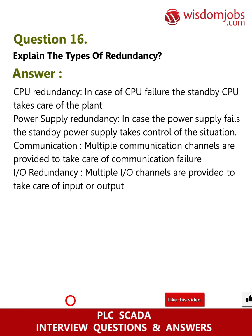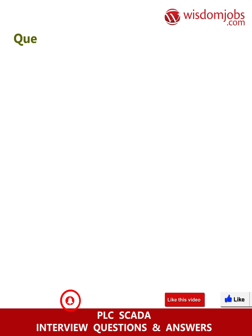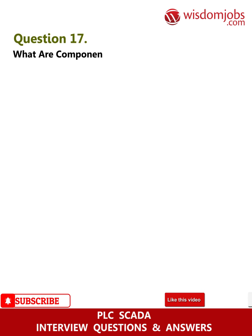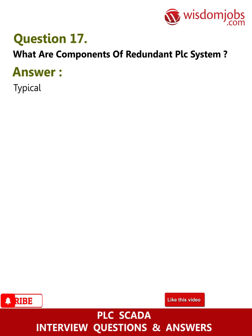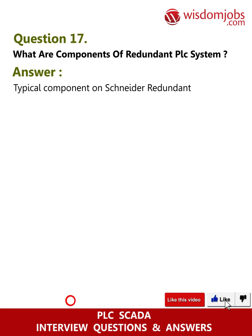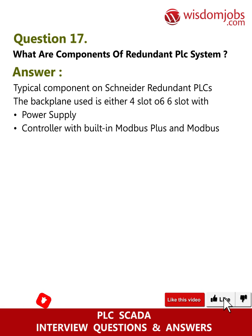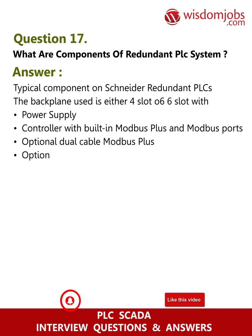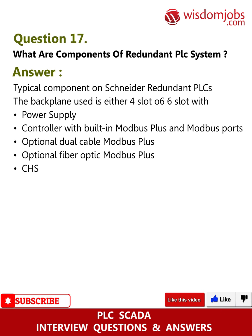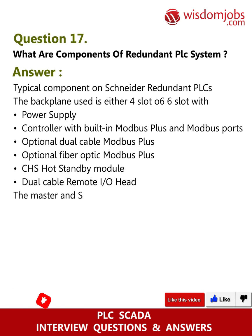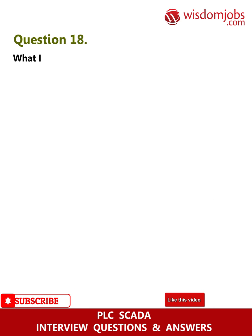Question 17: What are the components of a redundant PLC system? Answer: Typical components on Schneider redundant PLCs — the backplane used is either a four-slot or six-slot, with power supply controller with built-in Modbus Plus and Modbus ports, optional dual cable Modbus Plus, optional fiber optic Modbus Plus, hot standby module, dual cable remote IO head. The master and standby configuration must be identical.